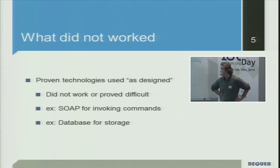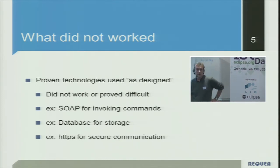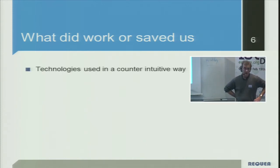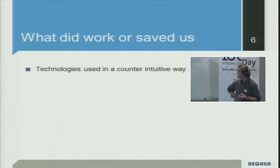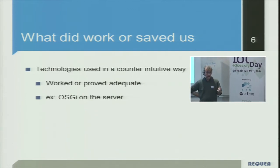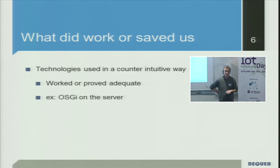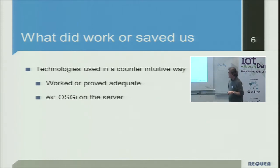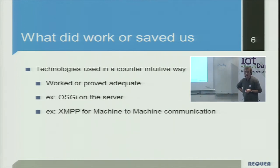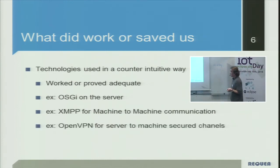For example, SOAP didn't work in M2M or IoT. Databases for storage were difficult. HTTPS for secure communication doesn't work. What did work or saved us were things used in a very counter-intuitive way — for example, OSGi on the server. We talk a lot about OSGi on devices, but using it on the server was really a time-saving and solution-saving approach. XMPP for machine-to-machine communication — XMPP is a chat protocol designed for human-to-human communication, not machine-to-machine, but it proved useful.